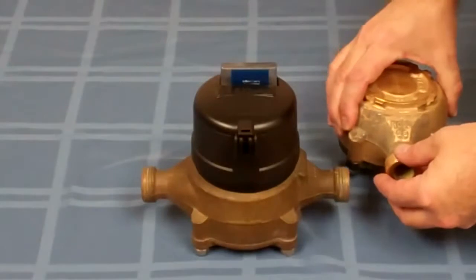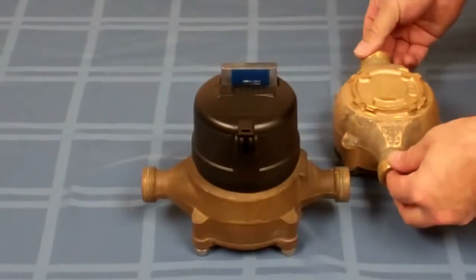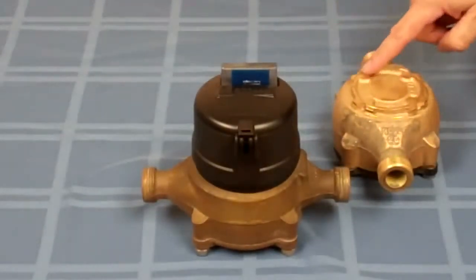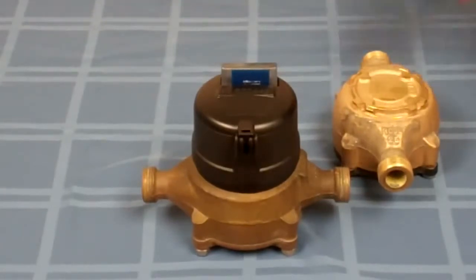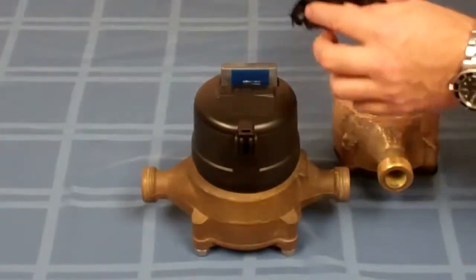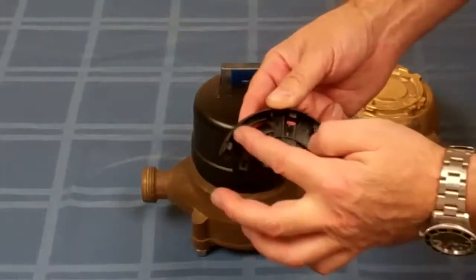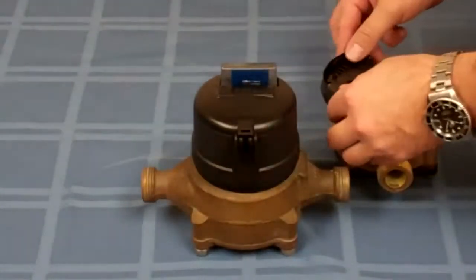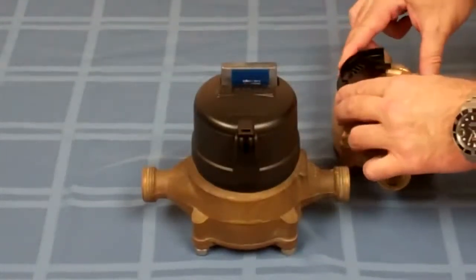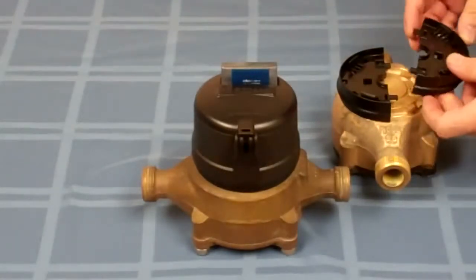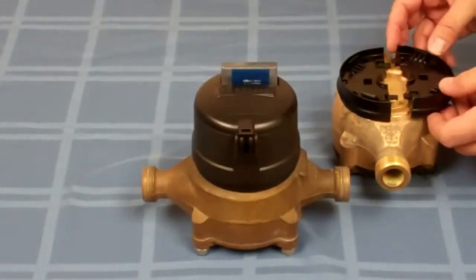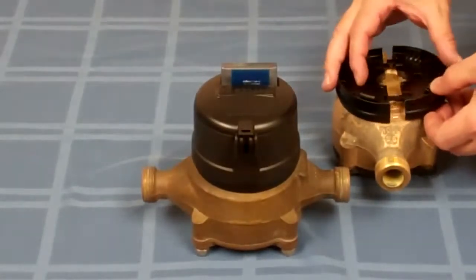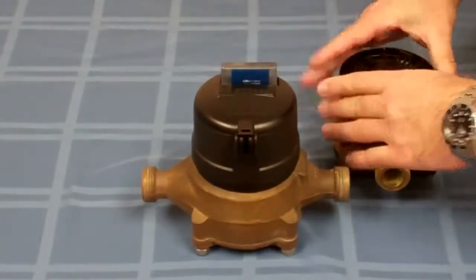Here's another version of the Badger PD meter. It has a little bit different register face, but the process is still the same. You're going to find these tabs here underneath the adapter, you're going to slide them on, and then you're going to snap them together, just like that.